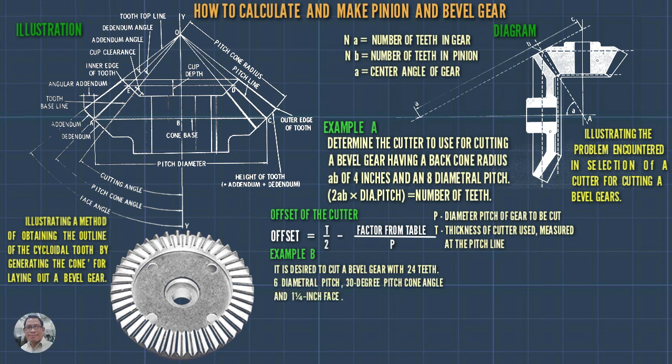Example B: it is desired to cut a bevel gear with 24 teeth, 6 diametral pitch, 30-degree pitch cone angle, and 1.5-inch face width.